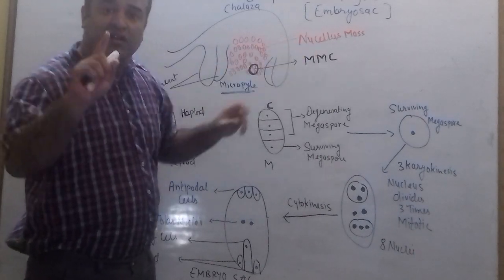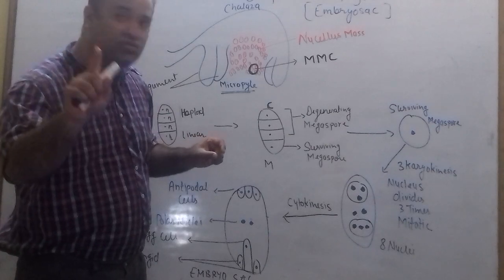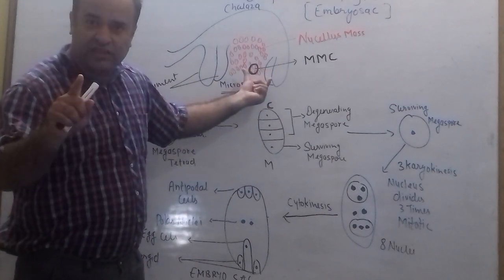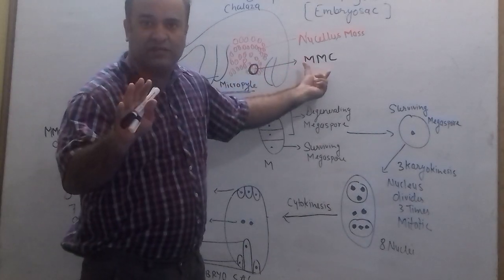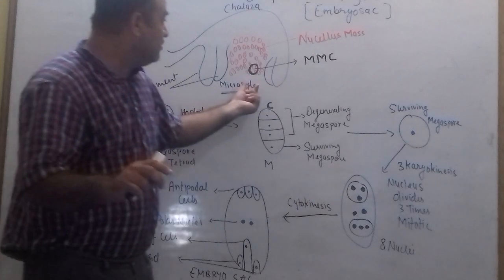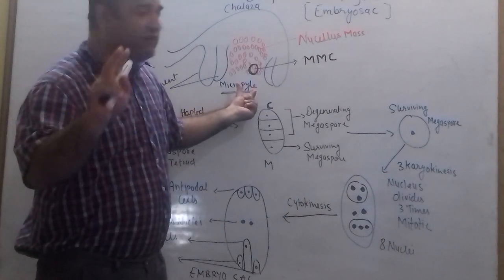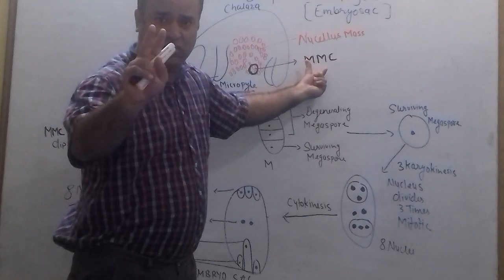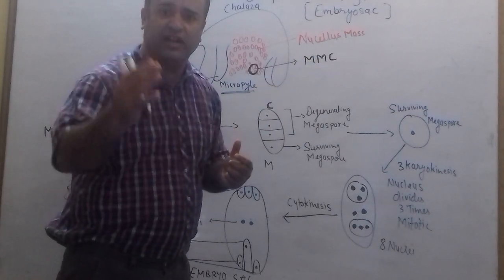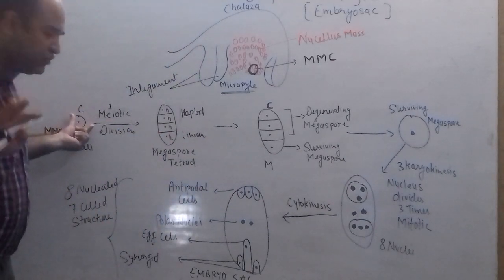One cell of the nucellus mass towards the micropylar end will grow in size and will convert into the MMC — MMC means Mega Spore Mother Cell. Remember: one cell of the nucellus towards the micropylar end will convert into the MMC, the Mega Spore Mother Cell.